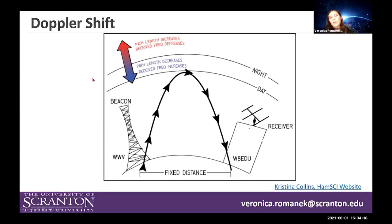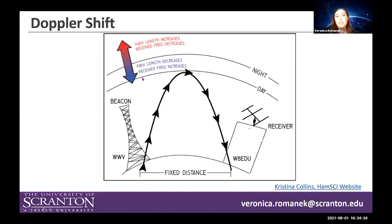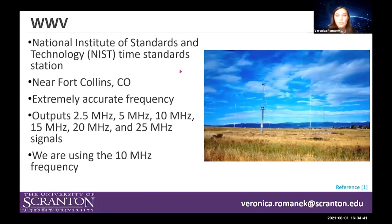This figure, created by Christina Collins and available on the HamSci website, shows how when the path length increases, the received radio frequency decreases, and as the path length decreases, the received frequency increases. The source of the radio waves we're using is from WWV.